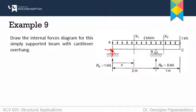Here I have a pin support with two reactions, RAY and RAX. Here I have a roller pointing upwards, so I will have one support reaction, RBY. I can also see that I have on the beam a UDL as well as a point load.